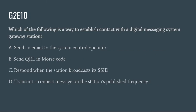G2E10: Which of the following is a way to establish contact with a digital messaging system gateway station? A. Send an email to the system control operator. B. Send QRL in Morse code. C. Respond when the station broadcasts its SSID. Or D. Transmit a connect message on the station's published frequency. The correct answer is D: transmit a connect message on the station's published frequency.